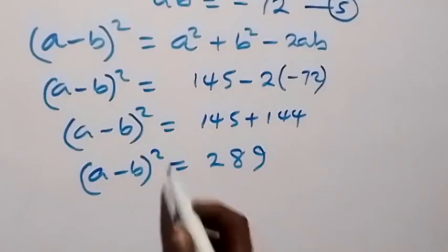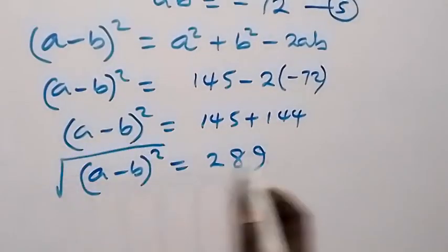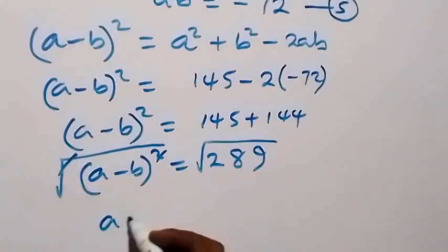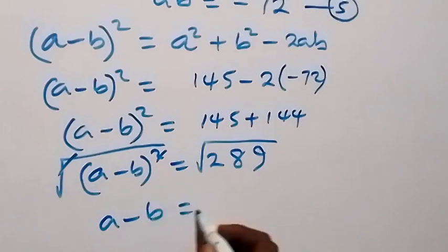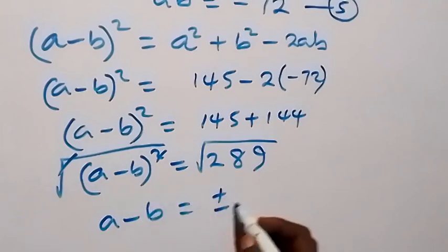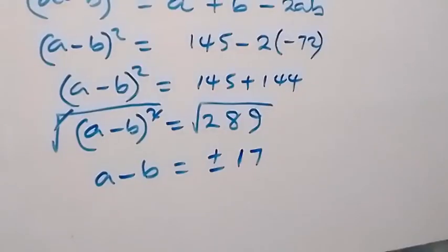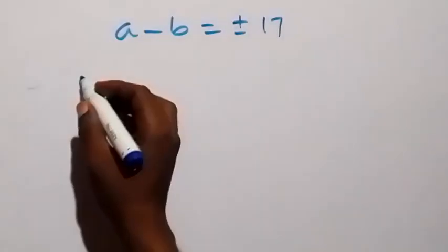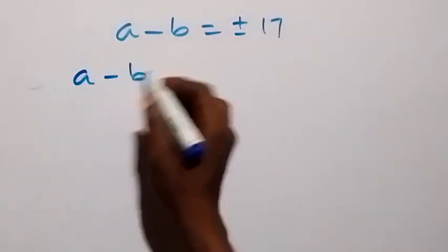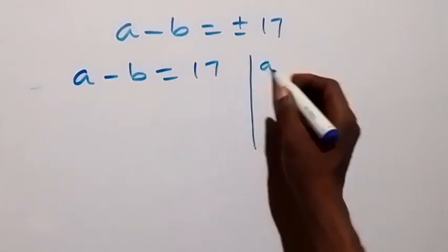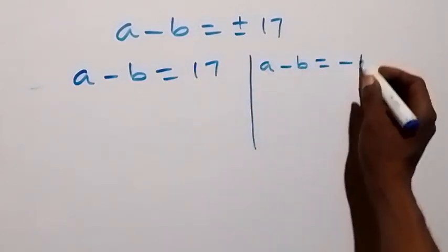Let's square root both sides. The square root cancels the square on the left, and we are left with a minus b, which is equal to plus or minus 17. So we have two possible values of a minus b: the first is a minus b equals 17, and the second is a minus b equals minus 17.